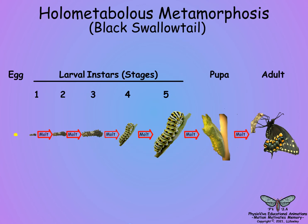By comparison, holometabolous larvae feed actively for about three to eight larval instars, at which point they form a pupa that exhibits external adult structures that have been growing internally during each larval instar. Internal structural reorganization is extensive in pupae during metamorphosis.